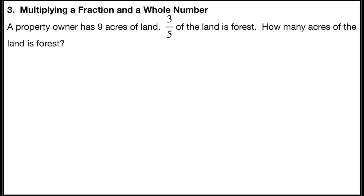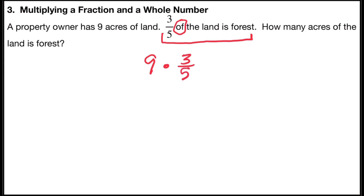Problem number three is multiplying a fraction and a whole number. It says a property owner has nine acres of land. Three-fifths of the land is forest. How many acres of the land is forest? The key word here is 'of,' which means multiply. So we're going to multiply nine by three-fifths.